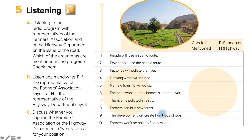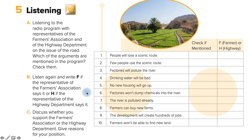People will start drinking contaminated water. Mr. Ryland: That isn't true. If factories go up near the river, they will have to obey environmental standards — they won't be able to dump their chemicals into the river. Will farmers lose their land? Actually their land will be worth much more. They will be able to sell at very high prices and buy land in other areas. The highway will bring development and create hundreds of new jobs. Should we stop progress and save the scenic route?